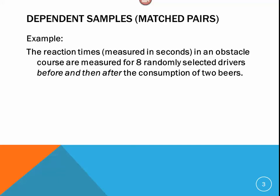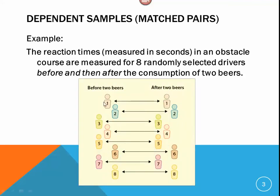The reaction times measured in seconds in an obstacle course are measured for eight randomly selected drivers before and then after the consumption of two beers. Here's the same group of people, but the qualifications that we have broken them down into is before two beers and after two beers. That's a categorical difference between the two, but they still represent the same group of people. This is a situation where we can use the methods we're going to talk about today.